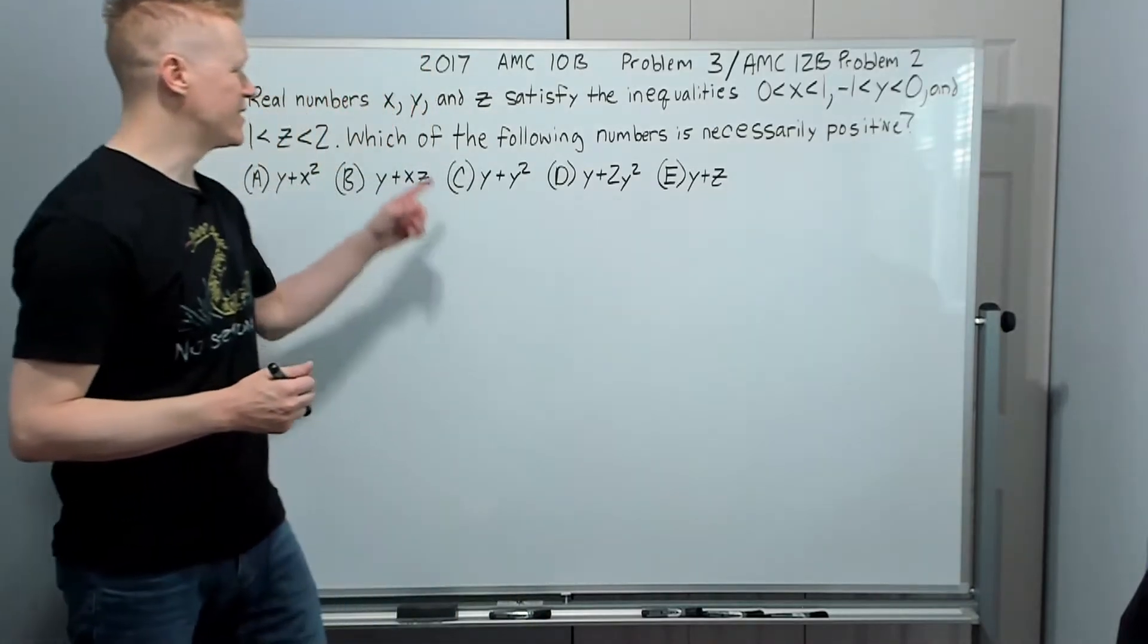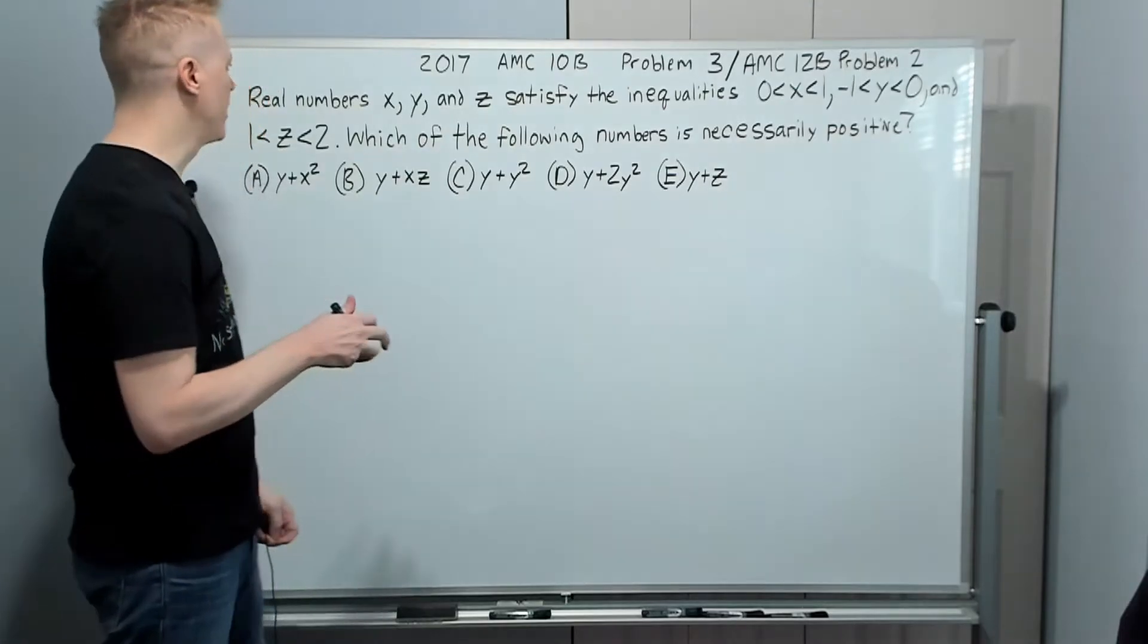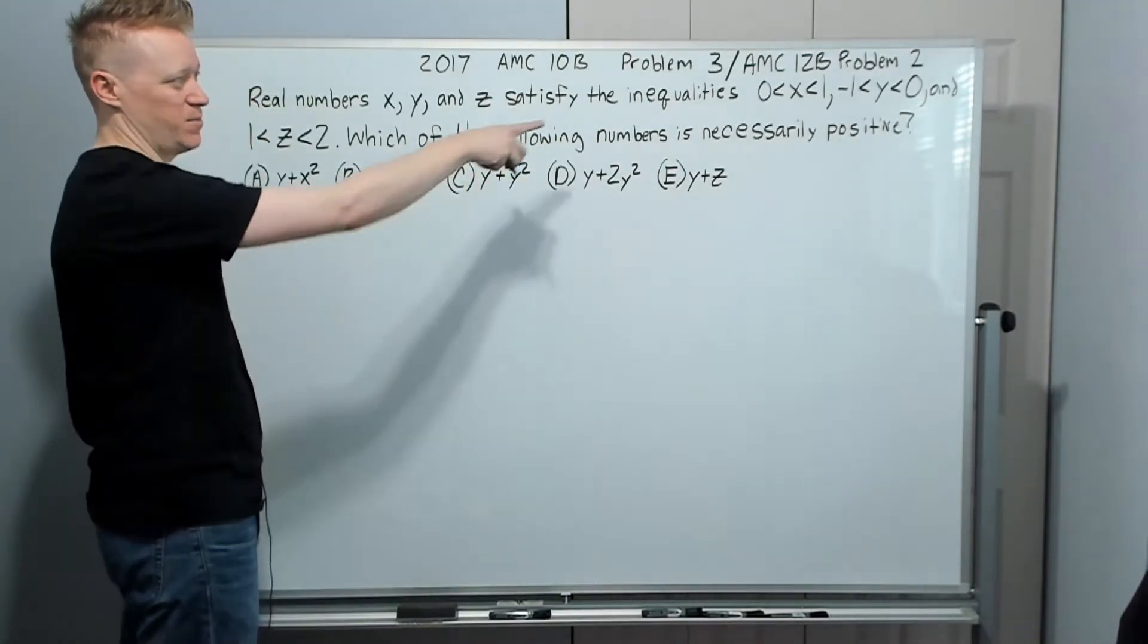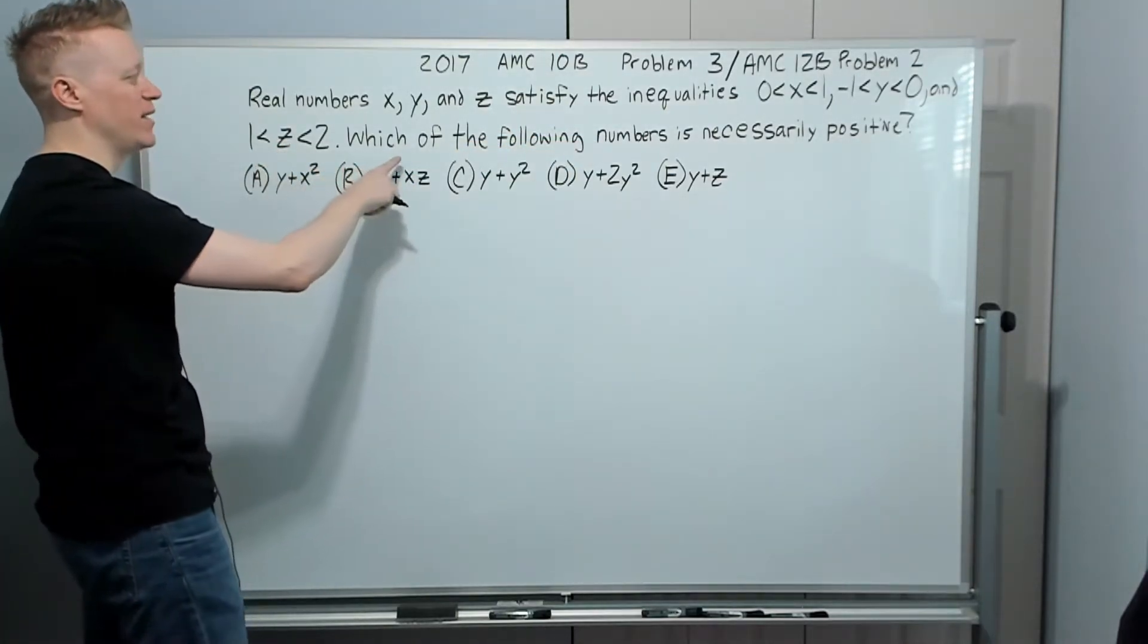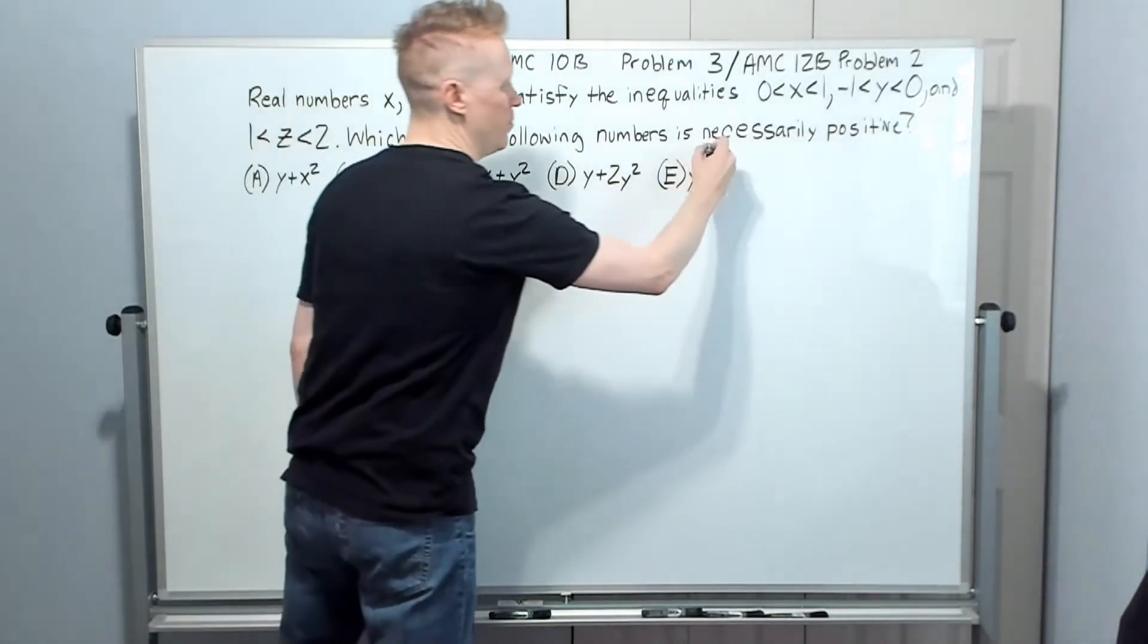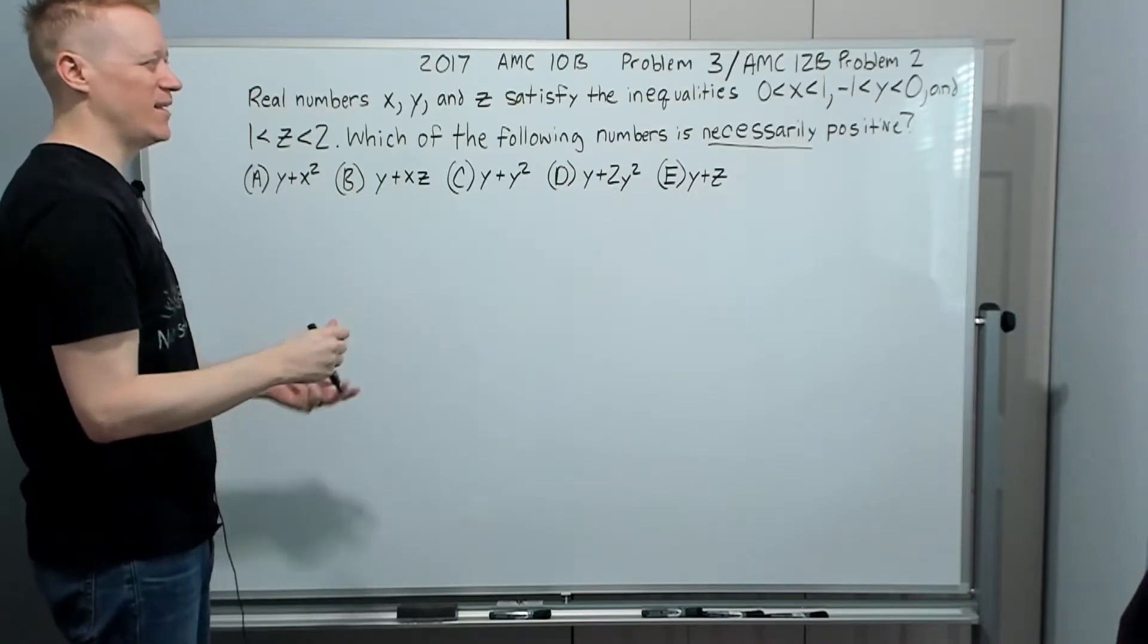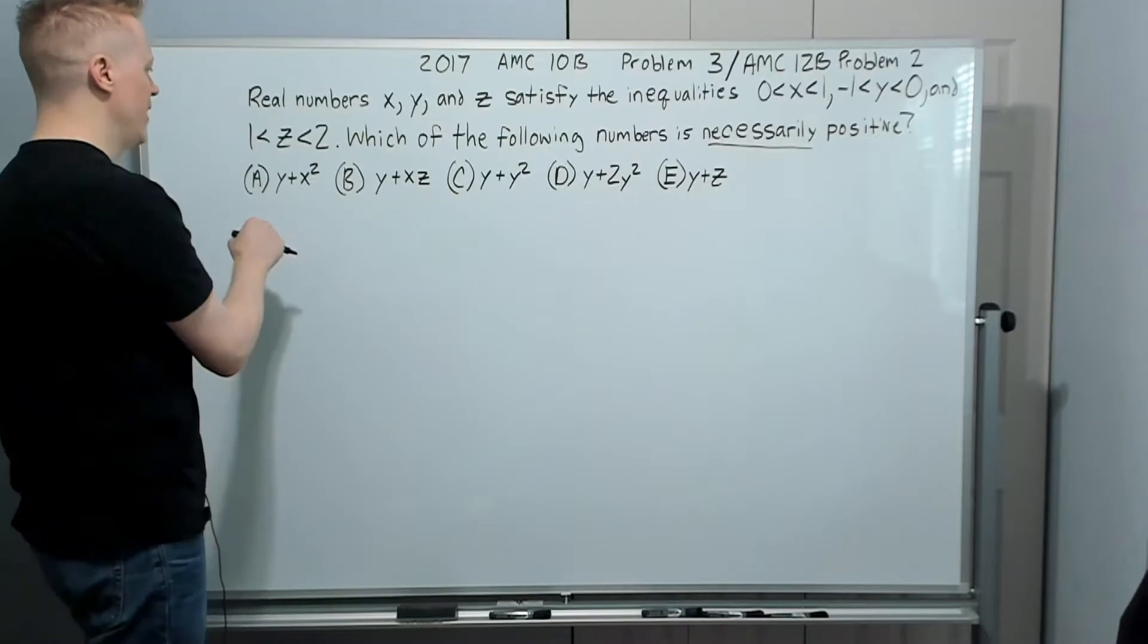All right, here we are in the 2017 AMC 10B problem number three. It was also the 12B problem two. Real numbers X, Y, and Z satisfy the inequalities. X is between zero and one, Y between negative one and zero, and Z between one and two, which of the following numbers is necessarily positive, meaning it has to be, not it could be, but there's no way it could not be positive. There's not really a super fast way to do this. Just kind of go through them and analyze each one.